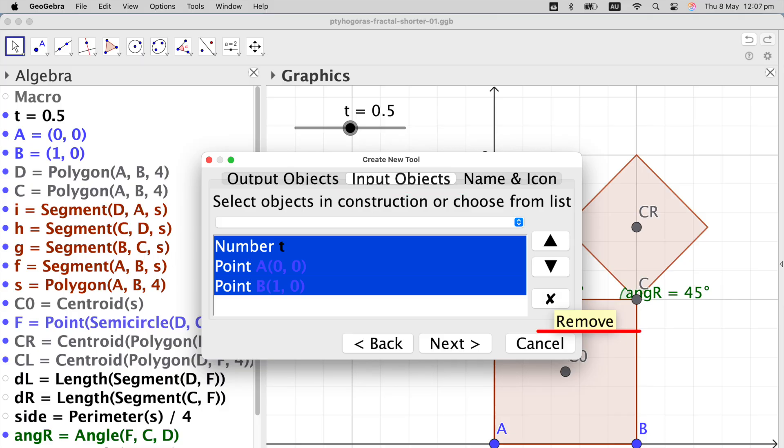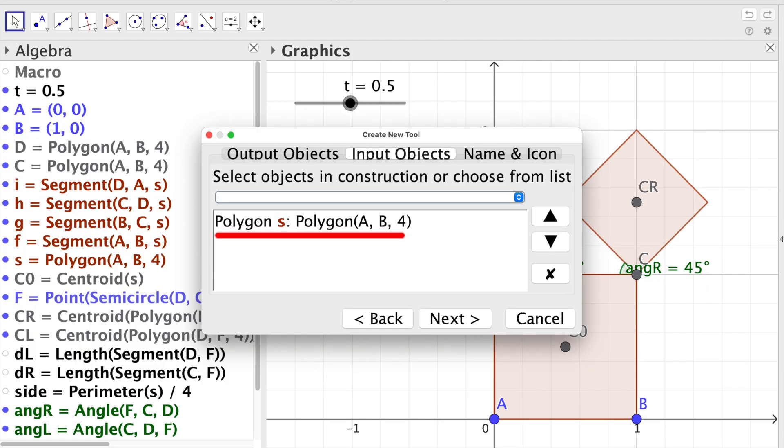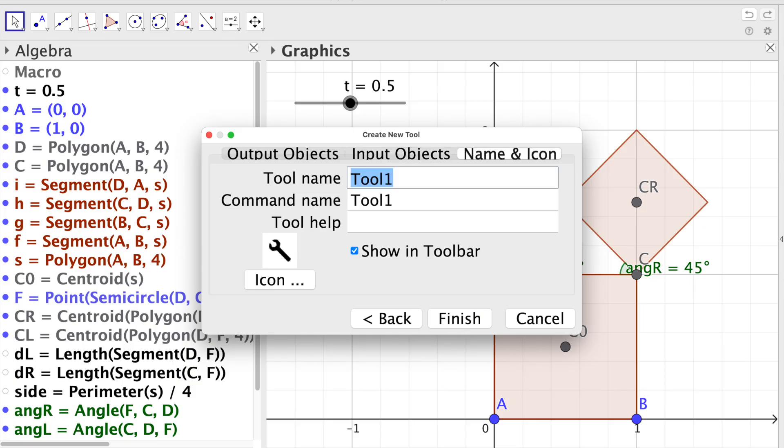In the Input Objects tab, first remove all the objects and then click on the list to select first the object S, the initial square and the slider T. Click on Next and now we can name our tool. I name it Grow and I type in the Help option, select the square then slider. This is how we should use the new tool.